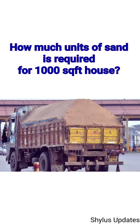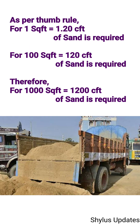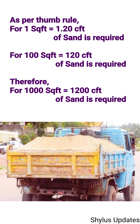How many units of sand is required for a thousand square feet house? As per the thumb rule, for one square foot, 1.20 cubic feet of sand is required. Therefore, for 1,000 square feet, 1,200 cubic feet of sand is required.